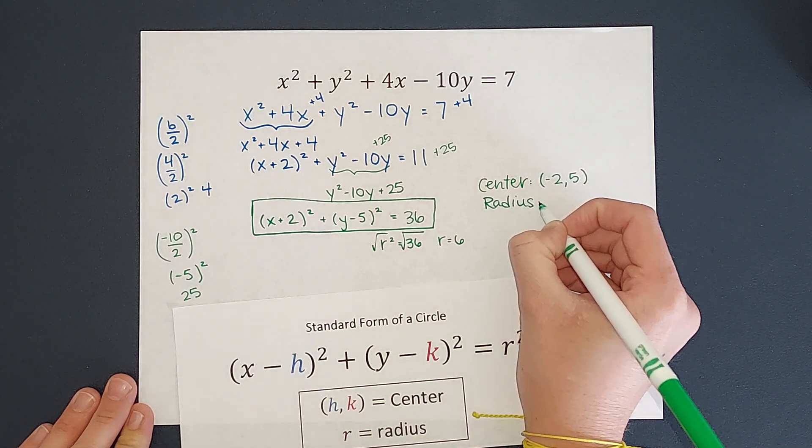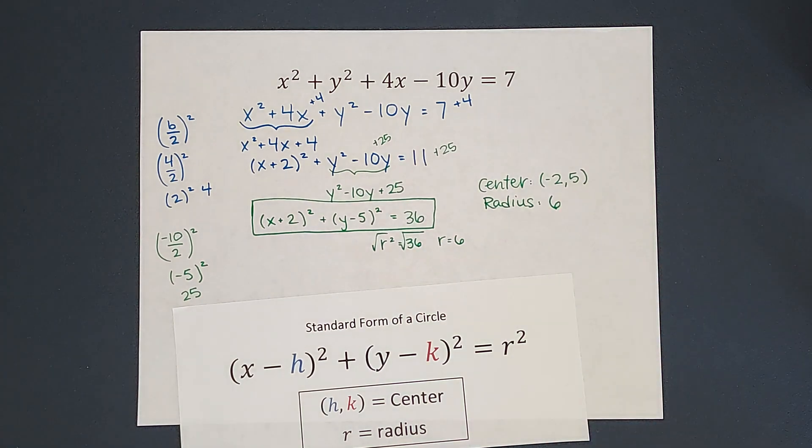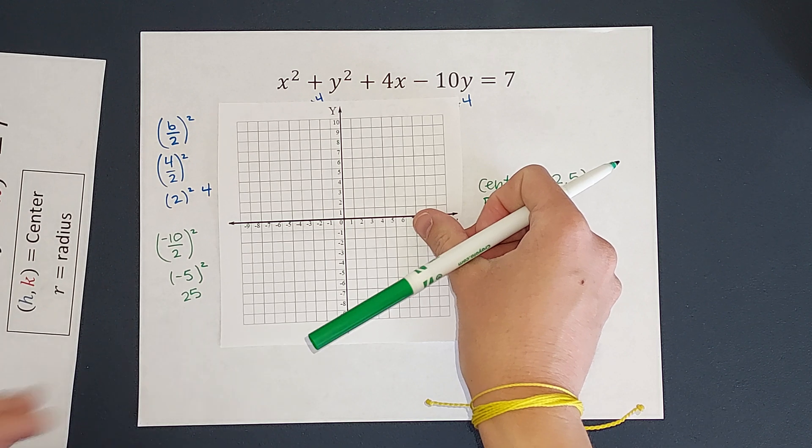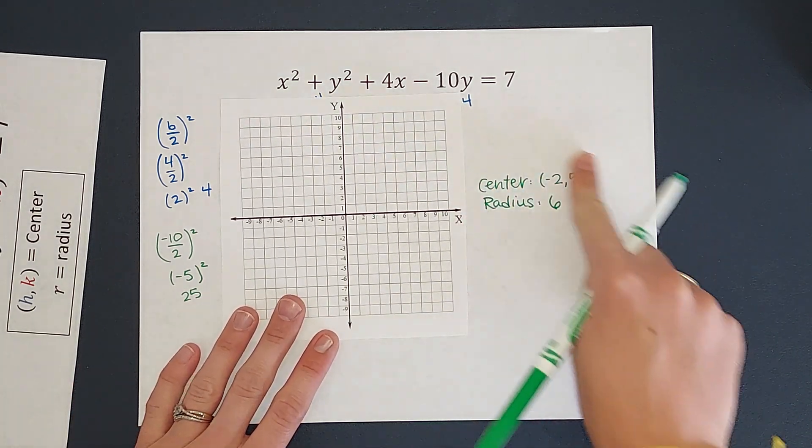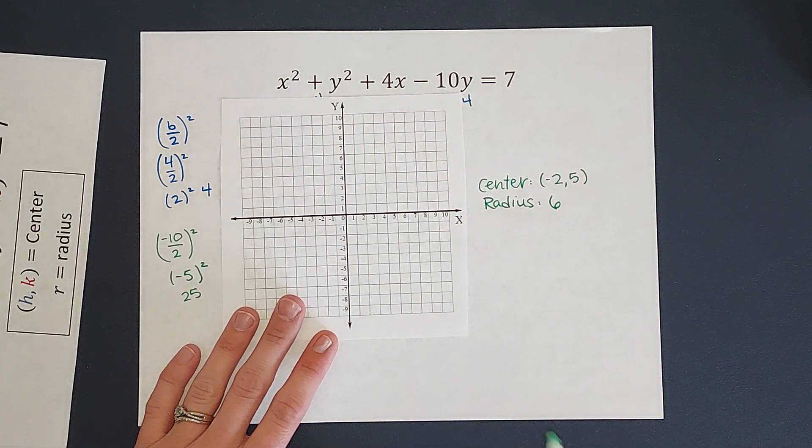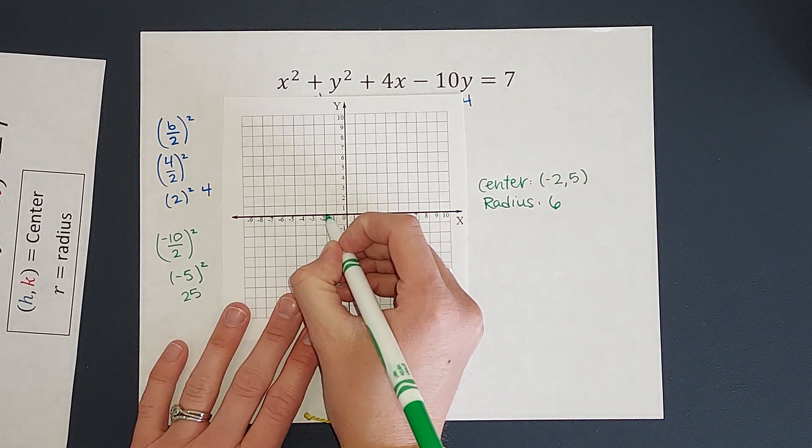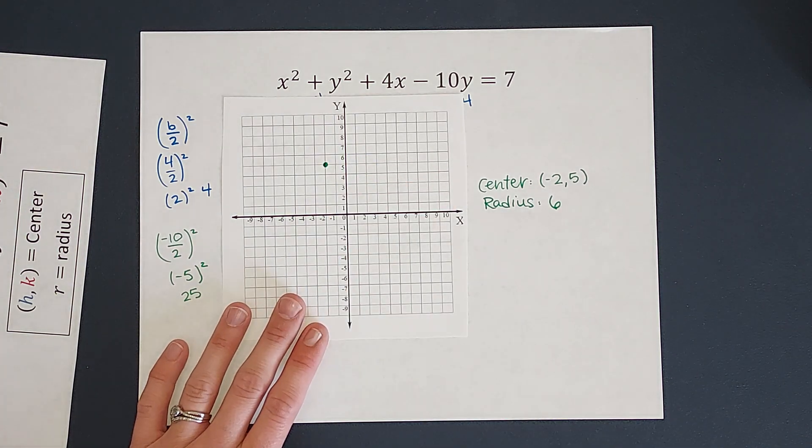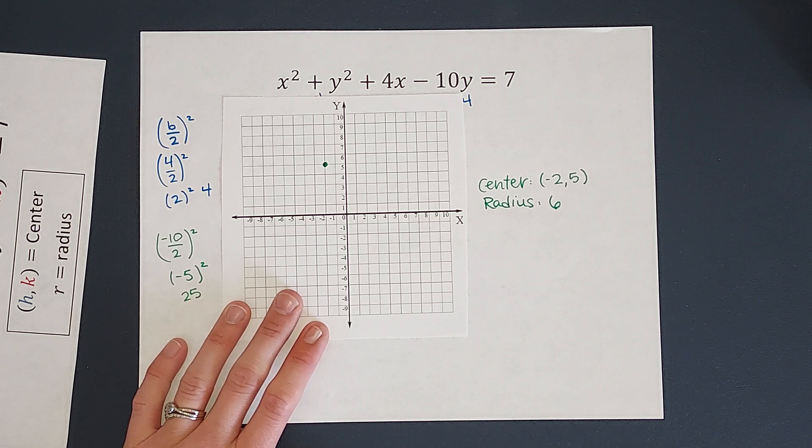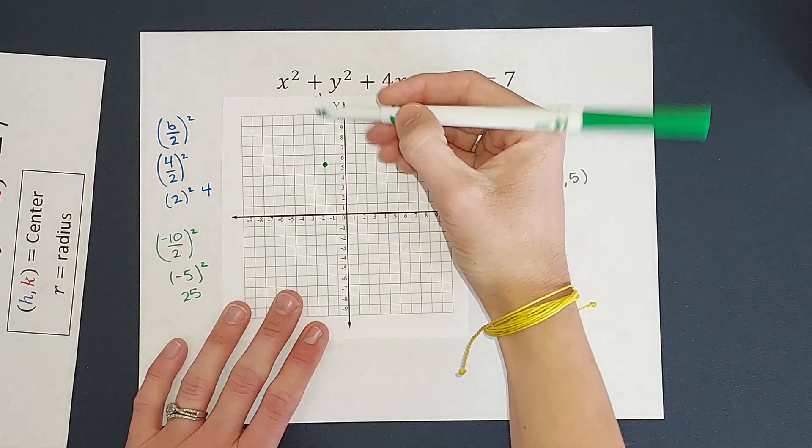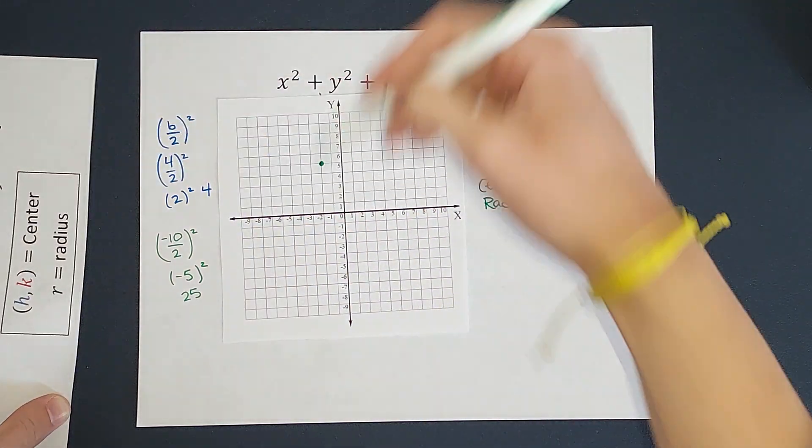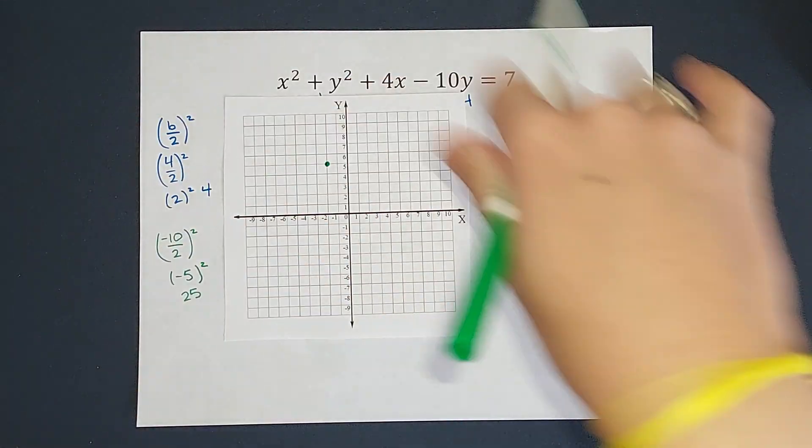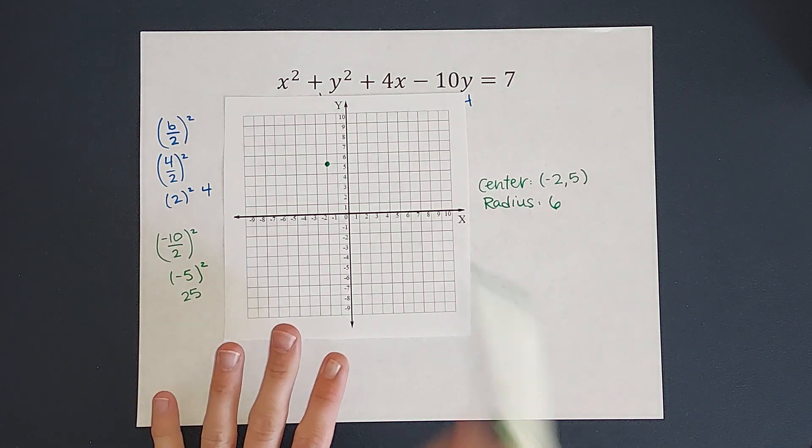Radius is 6. So let's go ahead and graph this. Here we go. With just these two pieces of information, I can graph this, right? So my center is negative 2, 5, so right there. And then my radius is 6. So easiest way to do it is I'm going to go up 6, to the right 6, left 6, and down 6, right? And that's going to give me the outline, basically, of my circle.